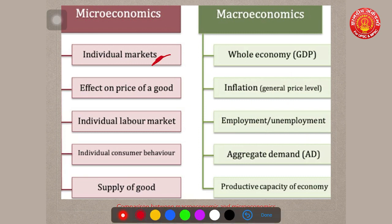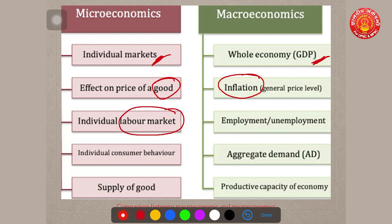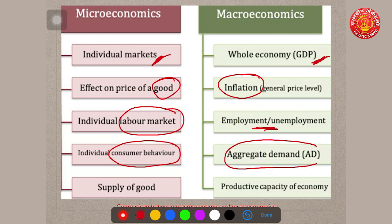Microeconomics tries to study individual markets, whereas macroeconomics focuses on the whole economy. Microeconomics focuses on the price of a specific good, while macroeconomics looks at overall inflation. Microeconomics examines individual labor markets — organized, unorganized, automobile, or agriculture sector — whereas macroeconomics looks at the overall employment and workforce status. Microeconomics studies individual consumer behavior, while macroeconomics focuses on overall aggregate demand and productive capacity.